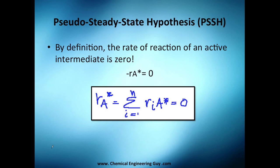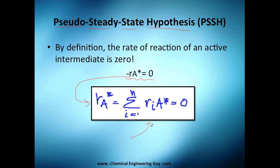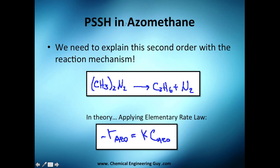It's time to see the PSSH, which is essentially the Pseudo Steady-State Hypothesis. By definition, the rate of reaction of an active intermediate is zero. More technically, the addition of every single rate of reaction of all the steps is going to be zero. So if you have three reactions, the total must be zero. Let's do an exercise with the PSSH.